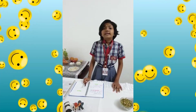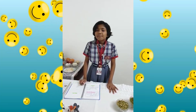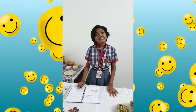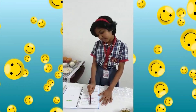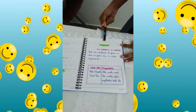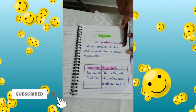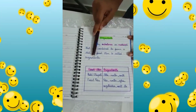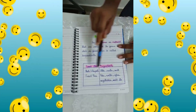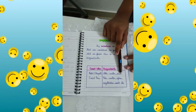We can't prepare a dish without ingredients. For example, we can't make chicken curry with only chicken — we also need water, spices, salt, and chicken. But before that, we should know what ingredients are. Any substance or material that is combined to form a dish or food item is called an ingredient. There is a table of food items and ingredients. If I want to prepare roti or chapati, I need atta, water, or salt.